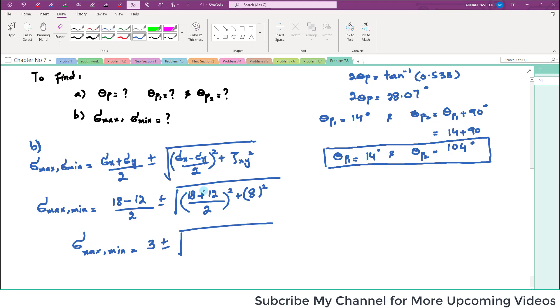This will be 30 divided by 2, which is 15 squared, plus 8 squared. This will be equal to 3 plus or minus. When you calculate this whole term, it will give you 17.